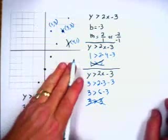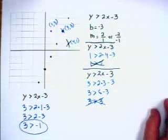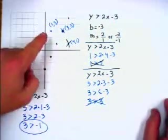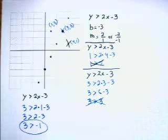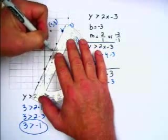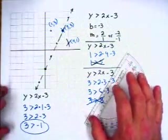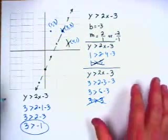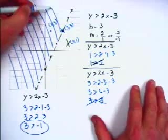What can we get from these results? We know that the point below the line, and by extension every point below the line, doesn't meet the requirements. The point on the line, and every point on the line, doesn't meet the requirements either. But the point above the line, and by extension every point above the line, does meet the requirements. We show that the line is the boundary between points that do and don't meet the requirements by leaving it dotted, and we shade the part of the graph above the line.